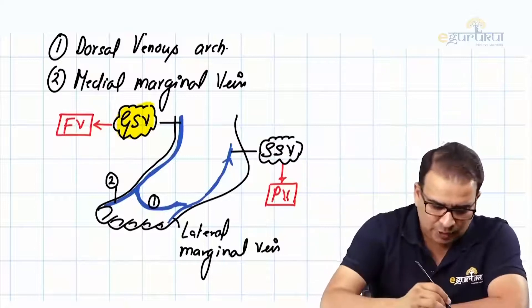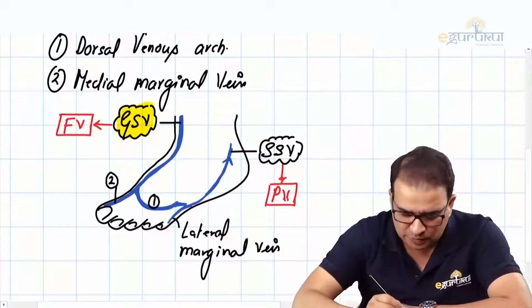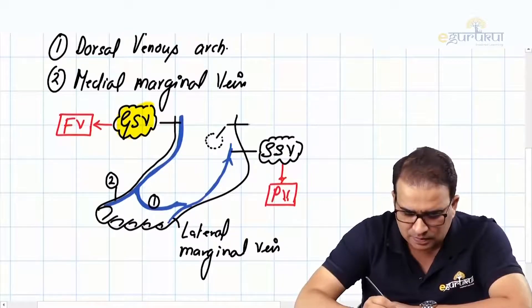Because this picture is from the lateral side, presume that this is the medial malleolus. I'm putting a dotted line here - just imagine it is the medial malleolus.